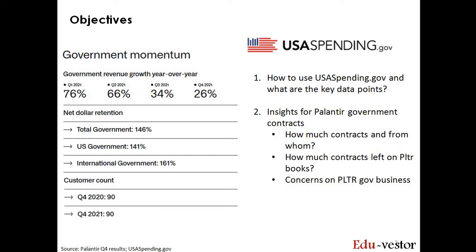Palantir's government business experienced a significant drop in year-on-year growth, raising concerns among investors. In this video, we'll be using usaspending.gov to understand more of the government contracts awarded. This website is the official source for spending data that provides transparency on how government funding is spent. As part of the Federal Funding Accountability and Transparency Act of 2006, contracts of more than $25k have to be published on publicly accessible websites. I'll run through how to use the website and the key data points and definitions. I do encourage you to check out the website and data yourself — the link is provided in the description below.